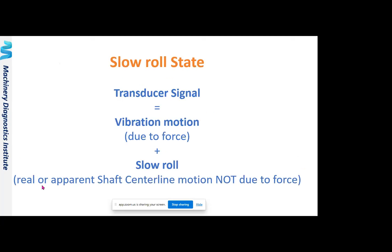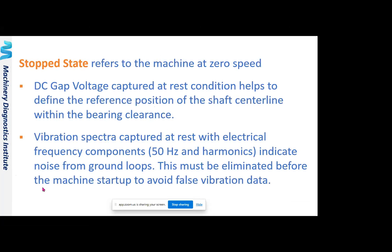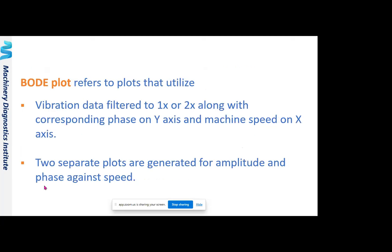Under normal conditions, the transducer signal consists of vibration motion from dynamic forces plus slow roll noise from shaft irregularities. To identify actual vibrations, you must subtract the noise from the signal — that is where slow roll data comes in. In the stopped condition at zero speed, DC gap voltages are captured, helping to understand how shaft centerlines are positioned in the bearings under normal operating conditions.